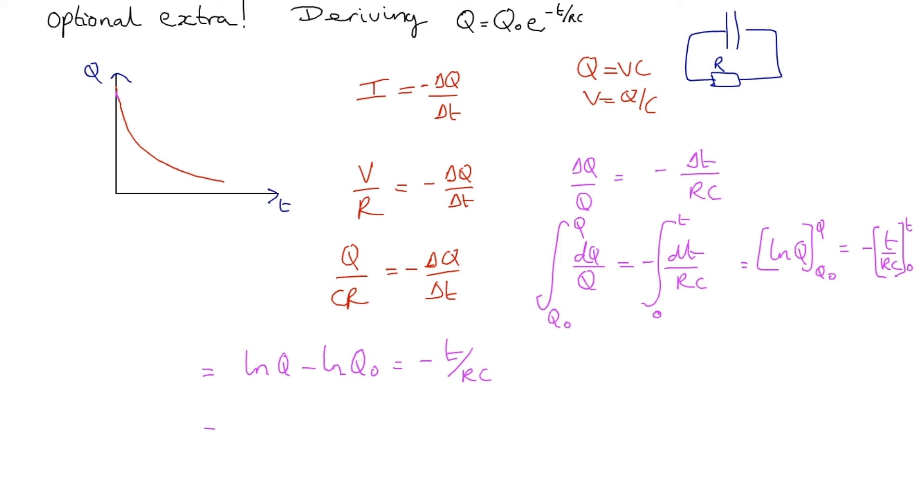We can do a little bit more with that. Using the log rules, that's ln(Q/Q₀) = -T/RC. The next stage is just to exponentiate that. If we raise e to the power of that equation, we get Q/Q₀ on the left-hand side and e^(-T/RC) on the right-hand side.